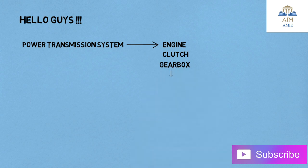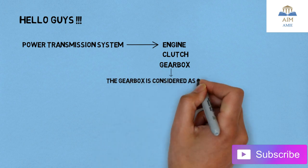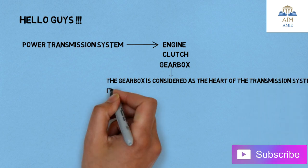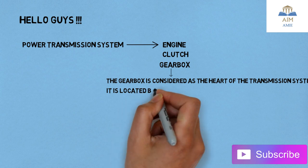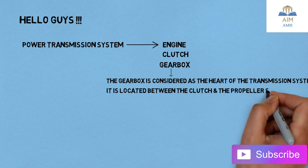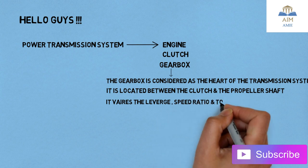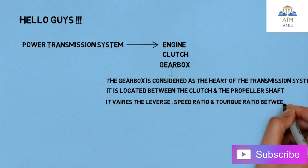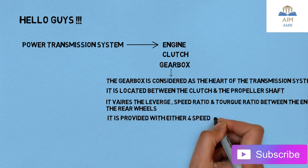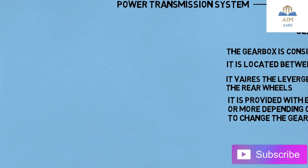So what is a gearbox? The gearbox is considered the most important parameter — it is the heart of the transmission system. It is located between the clutches and the propeller shaft of the automobile. It varies the speed ratio and torque ratio between the engine and the rear wheels, and is provided with either four speed or five speed ratios or more, depending upon the design of the gearbox.